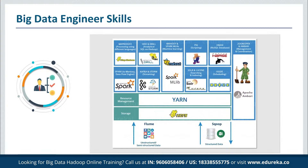Next, we have MapReduce, which is a parallel processing paradigm allowing data to be processed parallelly on top of distributed Hadoop storage. Next, we have Pig and Hive, which look at the data warehousing perspective of big data to perform analytics and scripting. Next, we have Flume and Sqoop, which are popular tools for importing and exporting data to HDFS.